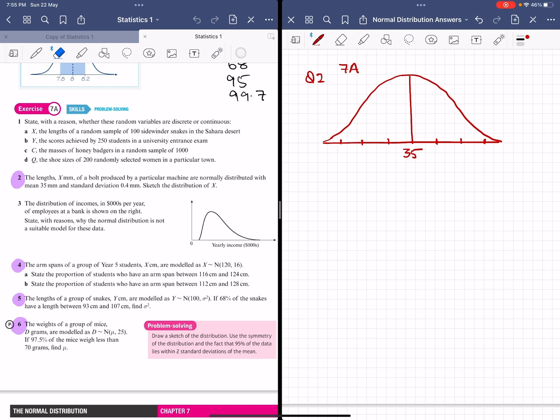The second is 35.8, third is 36.2—those are above the mean. Below the mean we have 34.6, 34.2, and 33.8, which is three standard deviations below the mean.